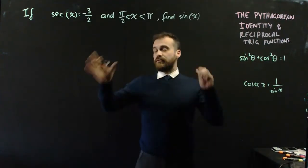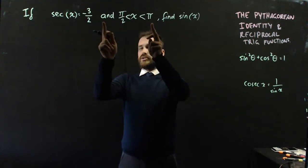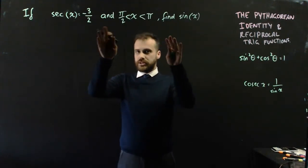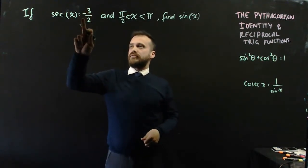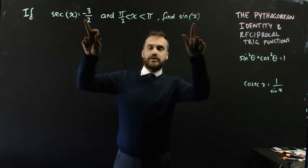A second example, very similar, but with this domain in the middle, which is going to narrow down our final solution at the bottom. So, we know that sec x is equal to negative 3 on 2, and we're trying to find sine x.